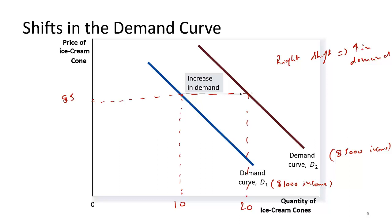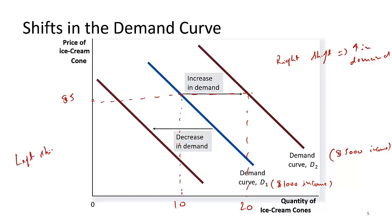On the other hand, there is a left shift, which is called a decrease in demand — left shift implies decrease in demand. In this case, for the same price, you might be buying less, maybe only 6 units. So what this shows is that for the same price, if other factors change, it can cause a shift of the demand curve either left or right depending on the situation.